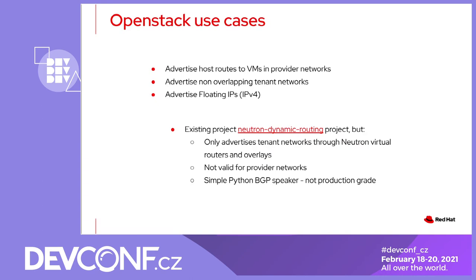This design is not supporting provider networks. Even though its architecture is pluggable and supports adding any backends you may want, the current reference implementation is a simple Python BGP speaker implementation which we don't believe is production-grade. We haven't seen many real-world use cases for this project. So we are considering whether it's worth trying to revive it, or implement a backend and reuse the API to some extent. This is merely where we are today, and with this in mind I'm going to move to the next slide.